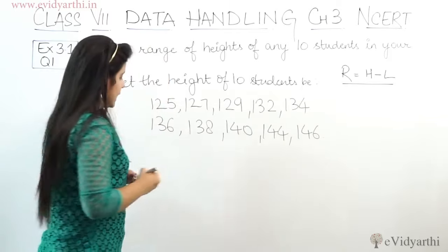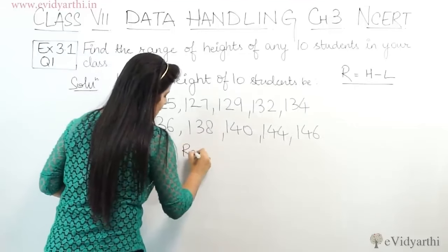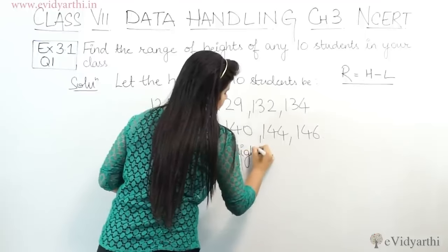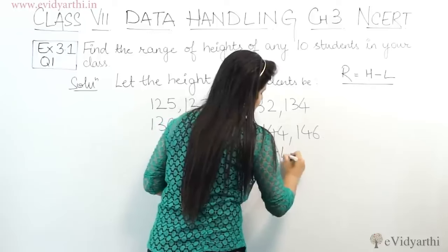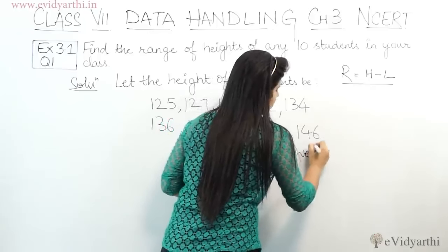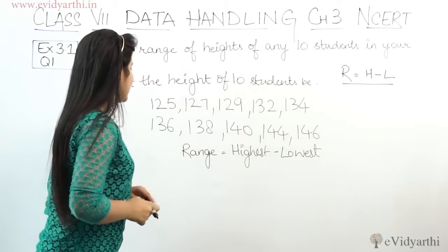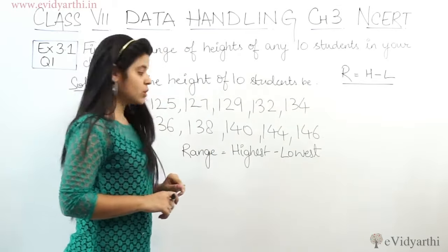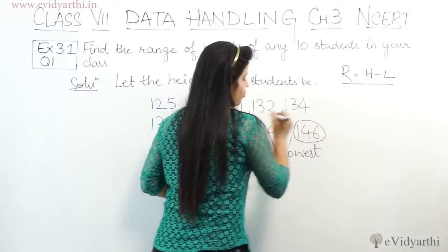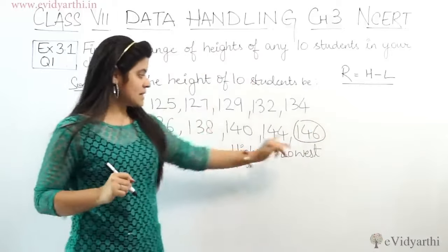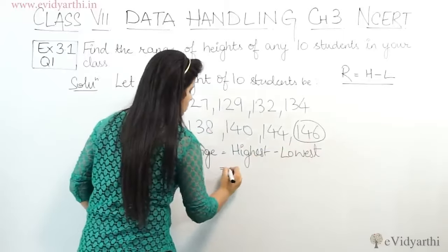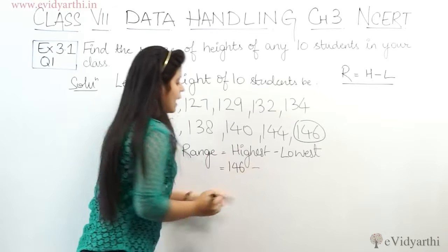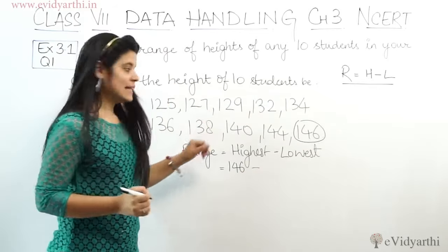So now we find the range. The formula for range is: highest minus lowest. The highest observation here is 146, and we subtract the lowest, which is 125.